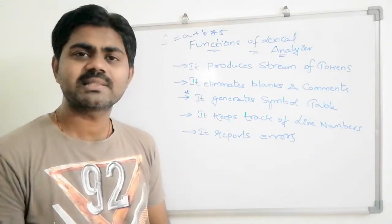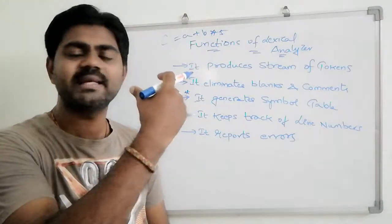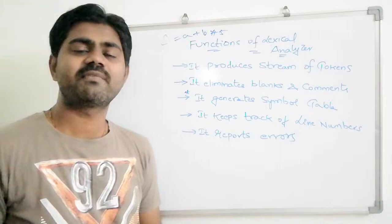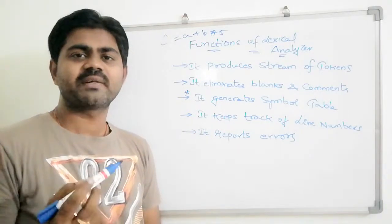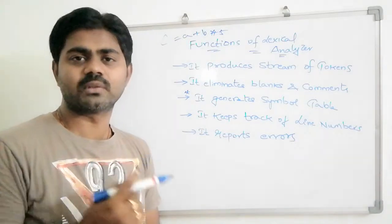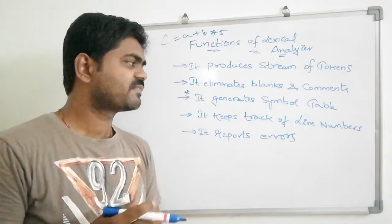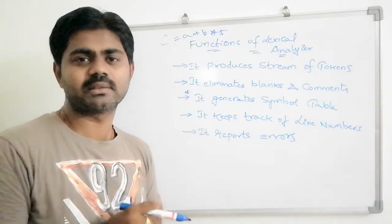It keeps track of line numbers because it scans everything. If an error occurs when scanning 100 lines of code, say at the 60th line, and it doesn't track line numbers, how would it know where the error occurred?